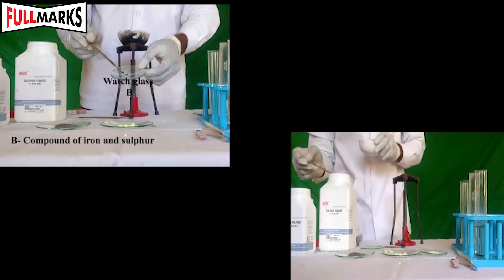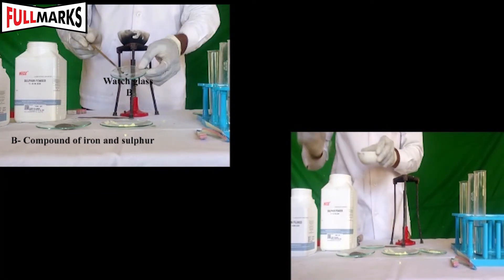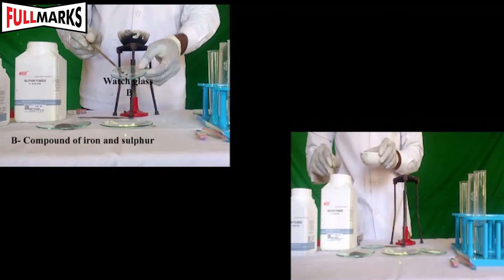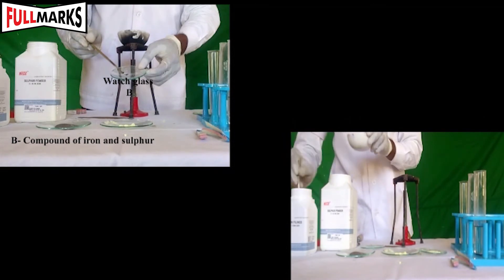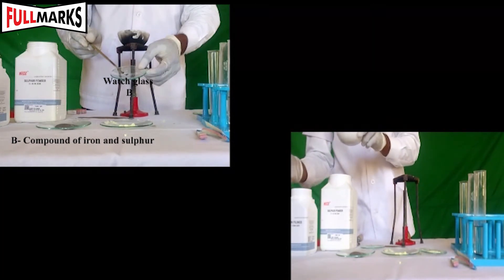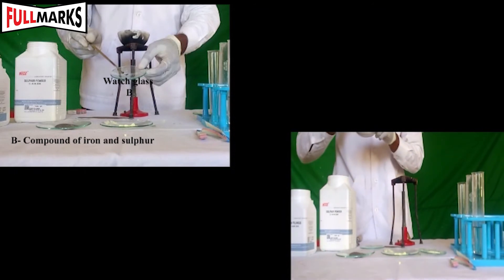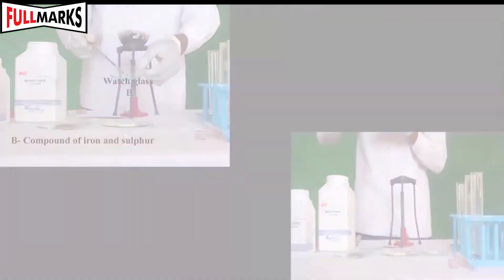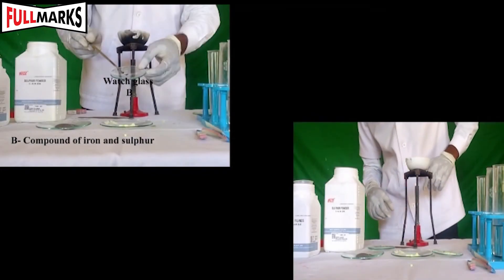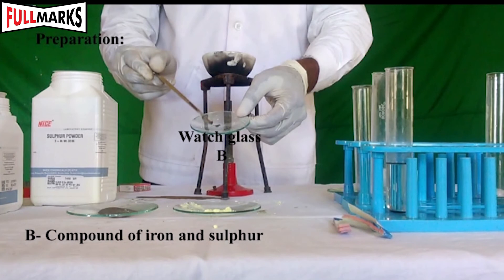Preparation of a compound of iron and sulfur: Take a pinch of iron filings and a pinch of sulfur powder in a hard glass test tube. Hold it in a test tube holder and heat it on the flame until the contents glow. The reaction between sulfur and iron filings forms iron sulfide.